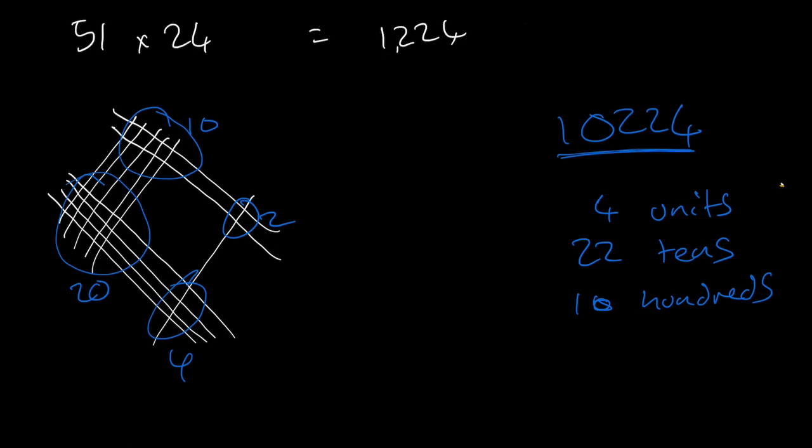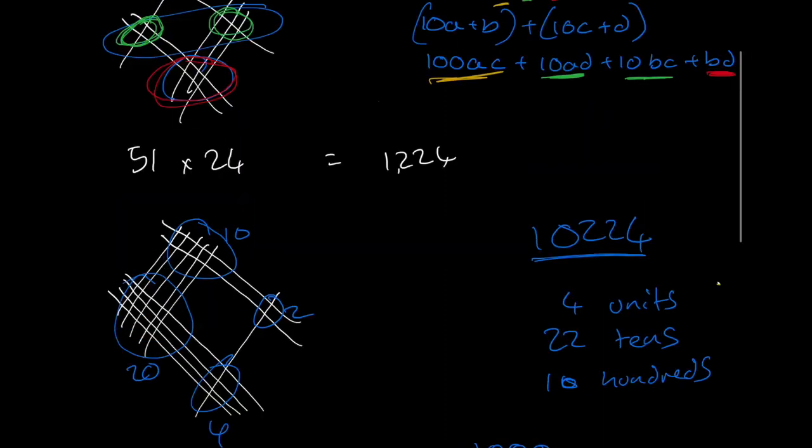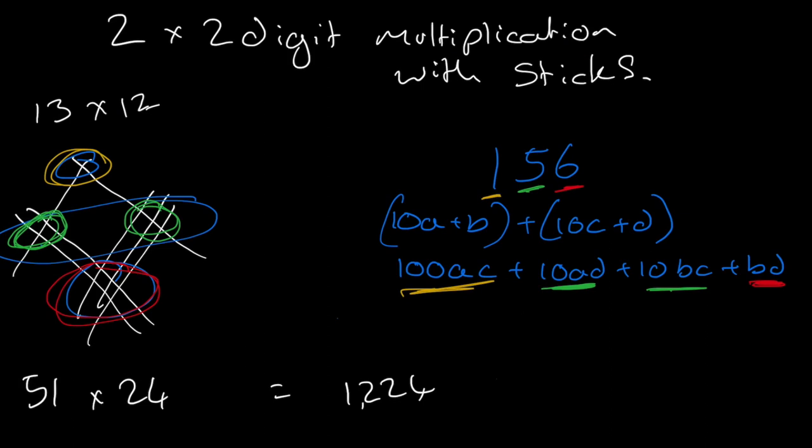So now if we add this together, 10 hundreds is 1000, then 22 tens is 220, and then 4 units. So you have to be careful when you add these together to get to the right answer. And that's kind of why I don't like this stick method. But if you think about it algebraically, it's quite obvious to see how it works.